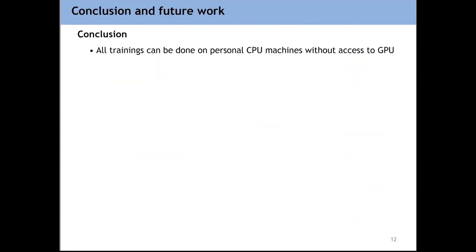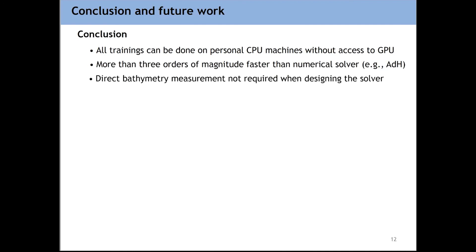To conclude the work, all the trainings can be done on personal CPU machines. I tried doing all this training on my own computer, my laptop, and it works. It takes probably a few hours, but it's still doable. So we can do the whole thing without GPU. And of course, the prediction stage is much, much faster. So it's more than three orders of magnitude faster than the common numerical solver like ADH. We don't need direct bathymetry measurement when designing the solver, because all the stages have been done starting from the PCGA and then generating the synthetic data. So there is no bathymetry measurement requirement for designing the solver. And the same solver can be used to predict velocity in presence and absence of bathymetry measurement. So the result that I showed in the previous slide, which was for the case without any bathymetry measurement, I use the same solver that I trained for the case with the bathymetry. So it's the same solver, nothing new.